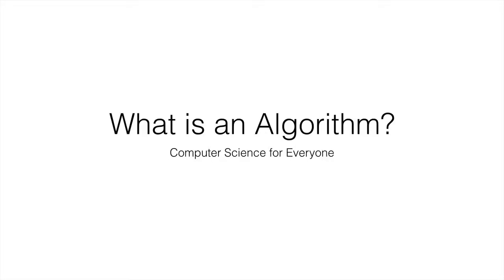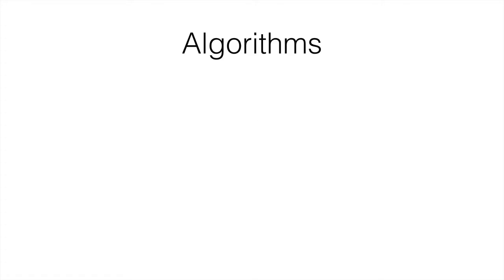Hi and welcome to your next lecture in Computer Science for Everyone. So far we've talked about how to create our programs in terms of the programming language, but we haven't talked about how these programs actually work, or what are the steps necessary for these programs to perform the objective that they want to perform. And this is what an algorithm is.